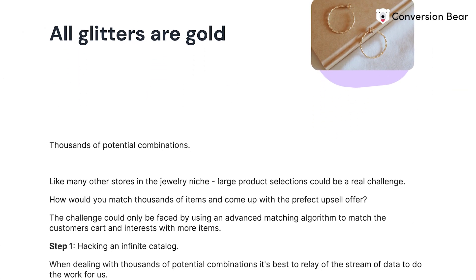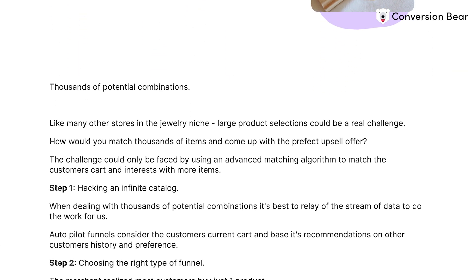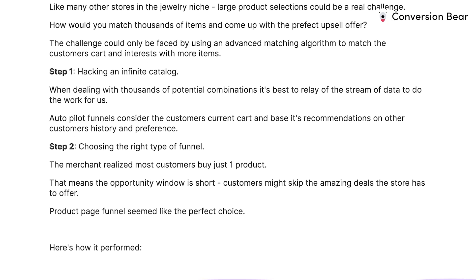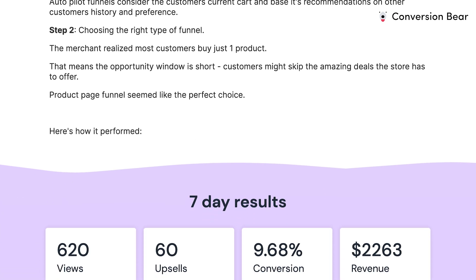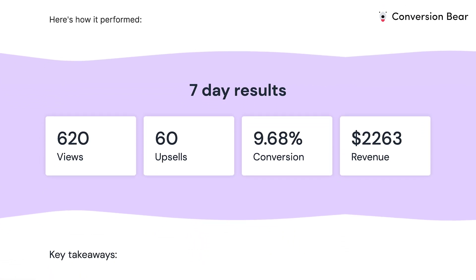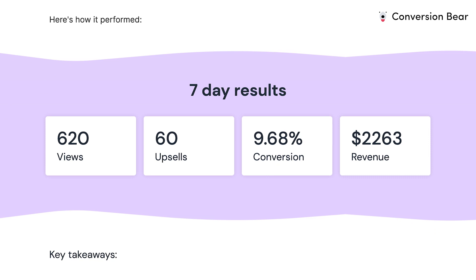For example, a jewelry e-commerce store used Honeycomb to sort out and catalog thousands of different variants and combinations in their inventory. Creating product categories and pricing tiers on autopilot freed up space to create the perfect upselling funnels to their buyers, which led to a 9.7% conversion rate and $2,263 of incremental revenue over just a seven-day period.